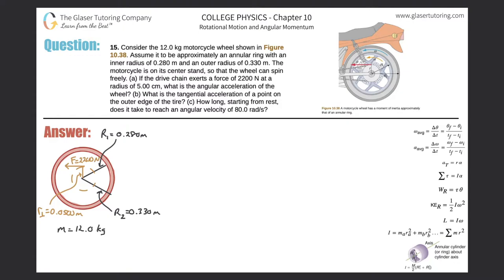Number 15. Consider the 12 kilogram motorcycle wheel shown in figure 10.38. Assume it to be approximately an annular ring with an inner radius of 0.28 meters and an outer radius of 0.33 meters. The motorcycle is on its center stand so that the wheel can spin freely, meaning no friction.